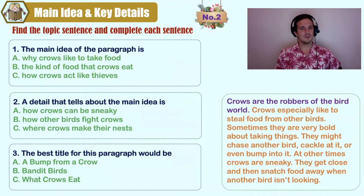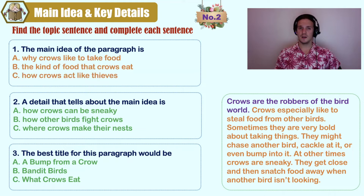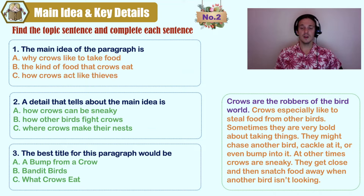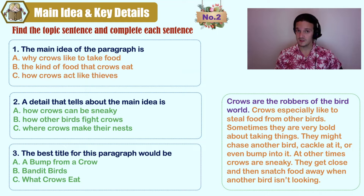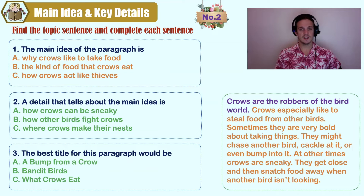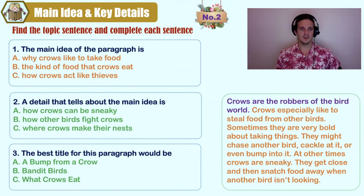The main idea of the paragraph: A) why crows like to take food, B) the kind of food that crows eat, C) how crows act like thieves. Be careful of the word 'why' in A and the word 'kind' in B. Look at the topic sentence in purple: 'Crows are the robbers — which means thieves — of the bird world.' Now look at C: how crows act like thieves. It talks about all the ways in which crows act like thieves. C is our main idea.